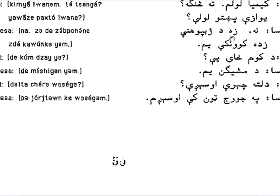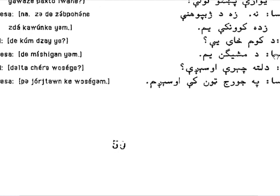'Ze de je poheni zdakawun ke yam' — I am a student of linguistics. 'Jib poheni' — 'jib' in Pashto means 'language' or 'tongue,' 'jib poh' means 'to understand language.' 'Zdakawun ke yam' means 'I am a student.' 'Yam' means 'am.' Then Asad asks: 'de kum zayye?' — where are you from?